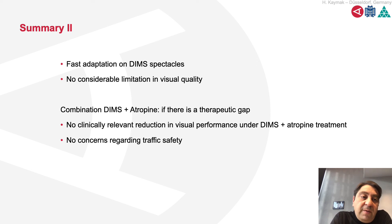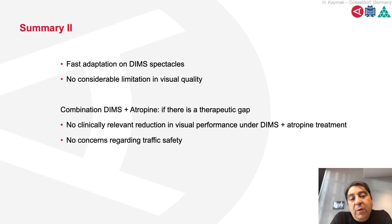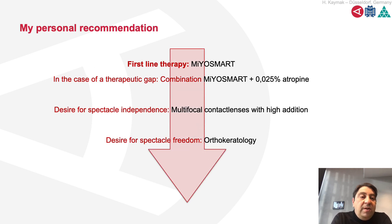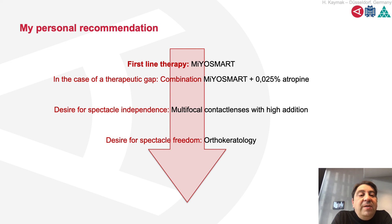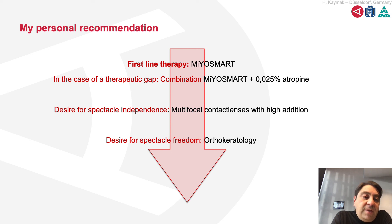As a second summary: we have fast adaptation to DIMS spectacles with no considerable limitation in visual quality. The combination of DIMS and atropine addresses any therapeutic gap. There is no clinically relevant reduction in visual performance, and no concerns regarding traffic safety. My personal recommendation: first-line therapy is Myosmart; in case of therapeutic gap, combine Myosmart with 0.025% atropine. If spectacle independence is desired, use multifocal contact lenses with high addition. If spectacle freedom is desired, orthokeratology is a very good solution. Thank you very much for your attention.